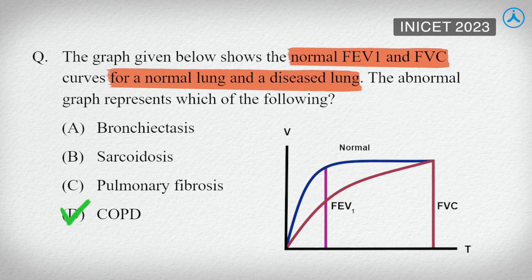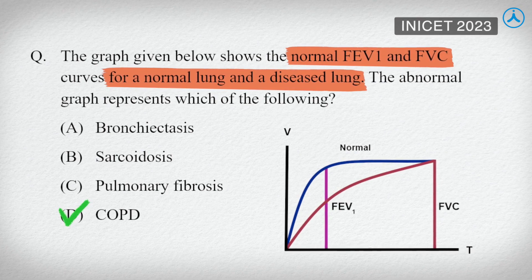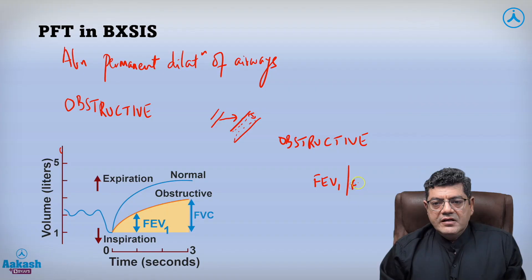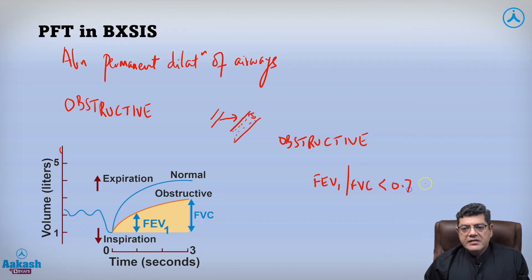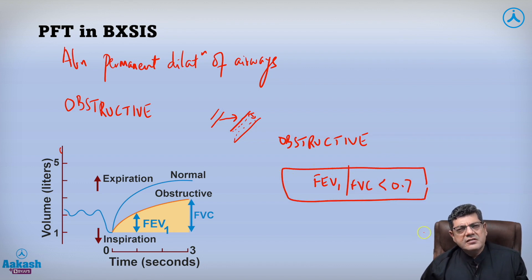An obstructive pattern on pulmonary function testing. When the FEV1 to FVC ratio is less than 0.7, this is the defining feature of obstructive airways disease.